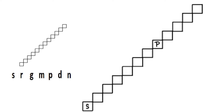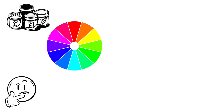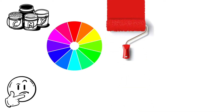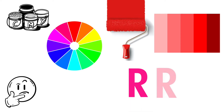Sa and Pa have only one fixed position, so we can't move them. However, Re, Ga, Ma, Dha, and Ni have two different positions. To understand how the same swara can have two positions, consider an analogy using colors: you have a basic color red, but red can have many shades — a darker red may be called maroon and a lighter red may be called pink. In the same way, you can think of these swaras as different shades of the same color.